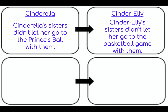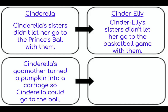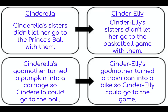Let's do another example. In Cinderella, her godmother turned a pumpkin into a carriage so Cinderella could go to the ball. I remember something similar happening in Cinderella — Cinderella's godmother turned a trash can into a bike so Cinderella could go to the game. So they both had a godmother that turned something into a mode of transportation so they could get to where they were going. That's a connection made between two books or stories.